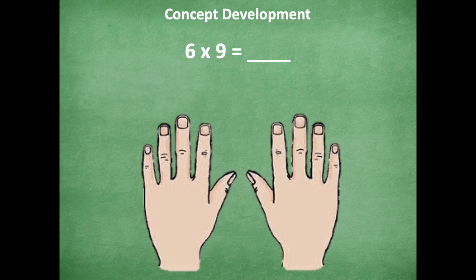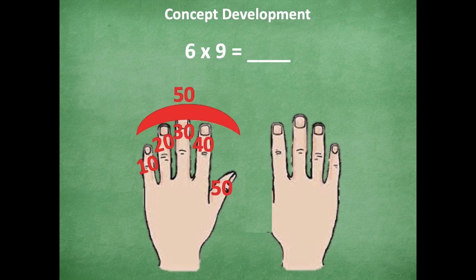All right friends, here's how I would do it. So I would count one, two, three, four, five, six. I'm going to put down that sixth finger. What's on the left side there in red represents my tens. So 10, 20, 30, 40, 50. Then on the right side is what's over here in blue represents the ones. One, two, three, four. So four. Combine 50 and four and you get 54. So 6 times 9 equals 54. How cool is that, friends? Isn't that a pretty awesome strategy?